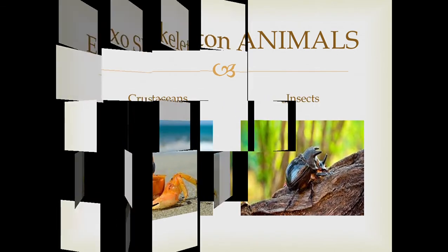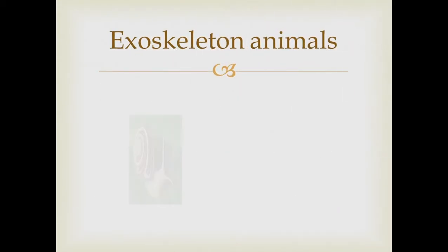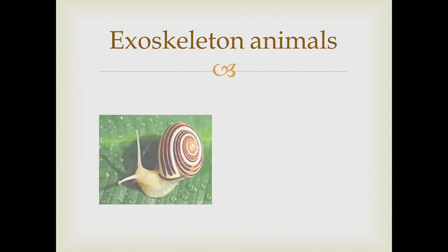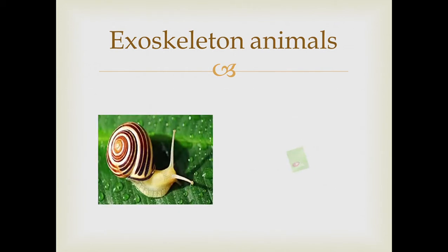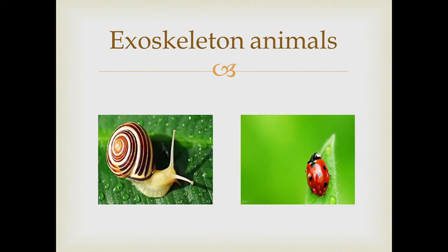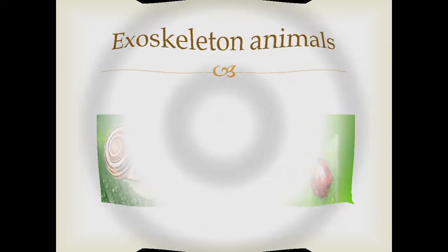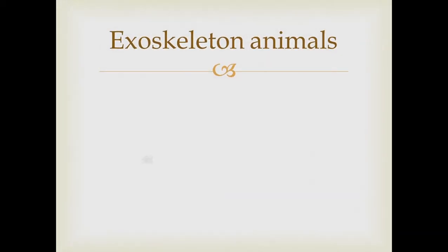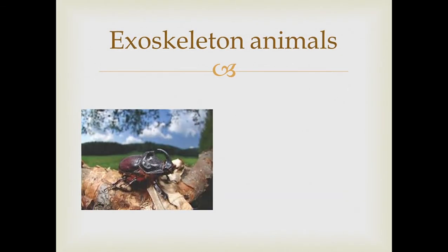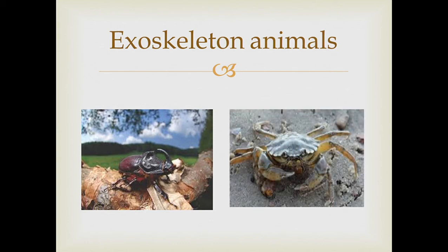Exoskeleton animals include not only snails, which are mollusks, but also crustaceans like crabs and lobsters, and insects like ladybirds and beetles. Other examples include bivalves and similar mollusks.